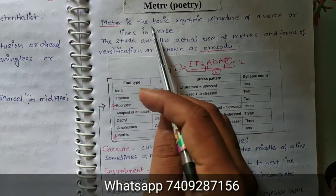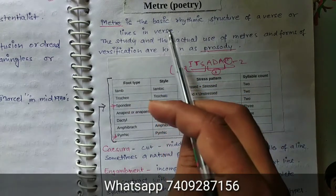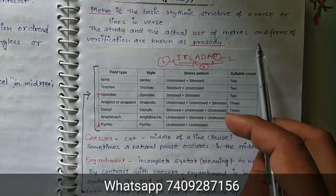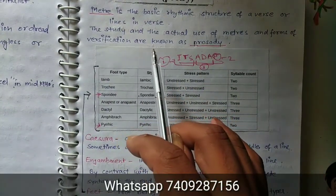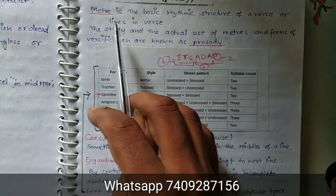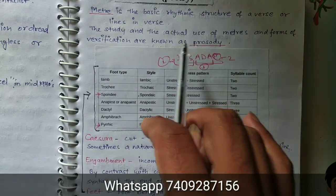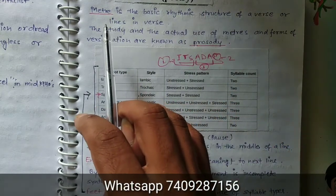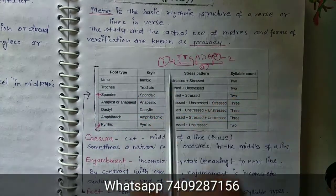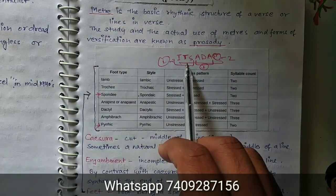Meter is the basic rhythmic structure of a verse or line in verse. The study and actual use of meters and forms of versification are known as prosody. So if we are studying the meter and the rhythmic structure, it is called prosody. And what is basically meter? Meter is a basic rhythmic structure. Here I have written a shortcut to remember because definition will not be asked in exam.